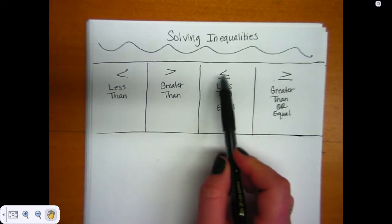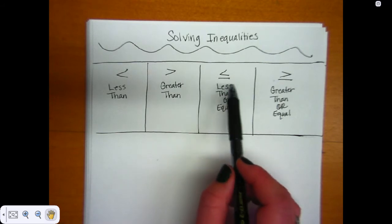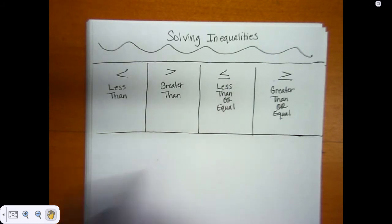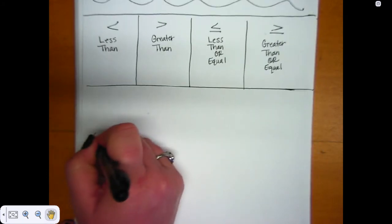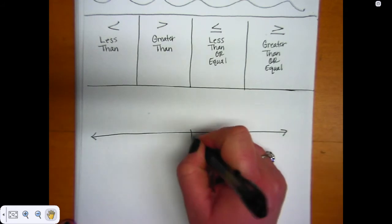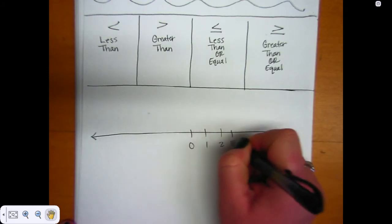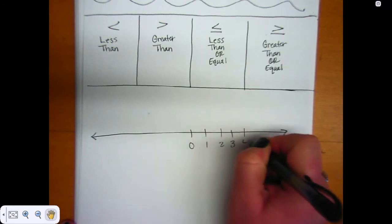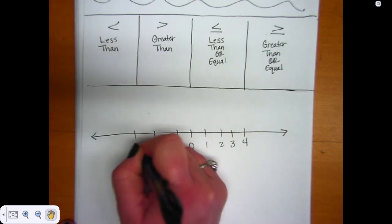And of course, we know this means less than or equal to, and we're going to talk about what that actually means in just a few seconds. So if we had a number line, we know that we have numbers that go to the right, and we have numbers that go to the left that are negative.